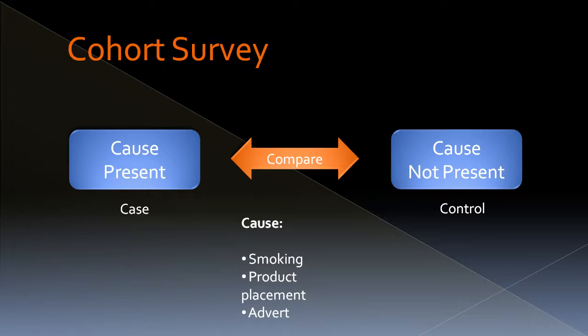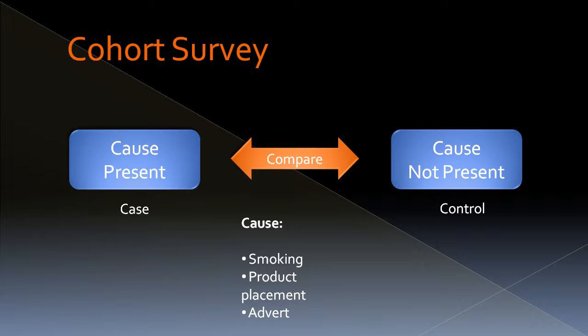In a cohort survey, we're looking instead at where the cause is present or not present, and making a comparison between them. In the case control we focused on the effect — this is about the cause. The cause might be smoking, product placement, or an advert. You take the group of people for which the cause is present and all of their features, and the group for which the cause is not present and all of their features. You split those groups by where the outcome is present versus not present, and then make a comparison to try to find the cause. You're investigating the cause in a cohort study.